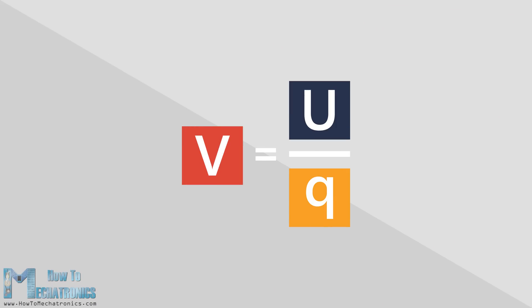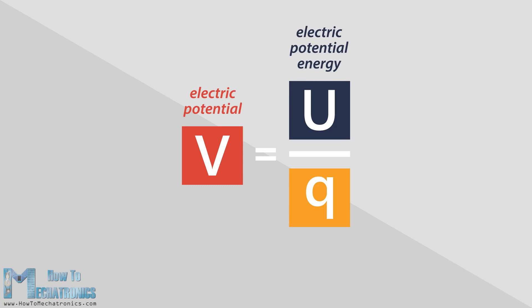This is the basic equation for calculating the electric potential, which shows that the electric potential V is equal to the electric potential energy U divided by the charge Q that would be placed at a point some distance away from the main charge.